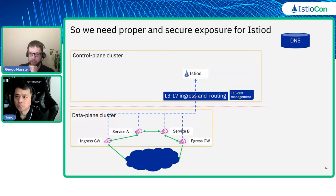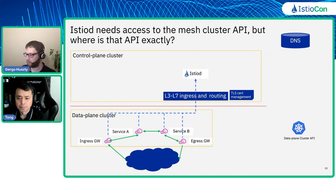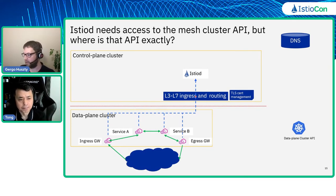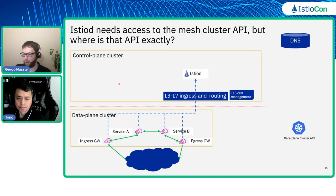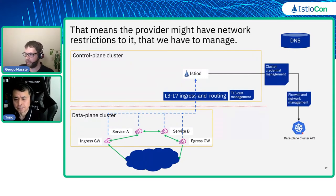When you correctly expose Istiod, it turns out Istiod also needs to access the mesh cluster API — the data plane cluster. This is needed for two things mainly: first, for the Istio configuration, like the istio.io custom resources, and second, it needs to be aware of what services, pods, and other workloads are in the cluster. In case this data plane cluster is also managed as a cloud provider service, its cluster API may be deployed on the control plane cluster alongside Istiod, or anywhere else. So you need to make sure Istiod can correctly access that cluster API, which may involve cluster credential management — renewing kubeconfigs, tokens — and also firewall or network management tasks, since cluster API access is often restricted.